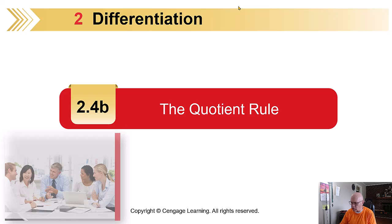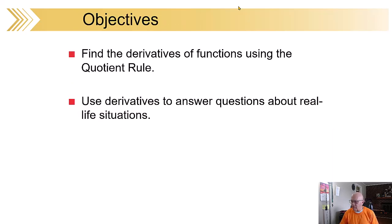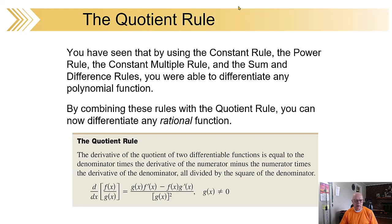We've got some practice on the product rule first — we don't want to confuse those two. Get the product rule done separately and then move on to the quotient rule. We'll find the derivatives of functions using the quotient rule. Remember, it's similar but different, so you have to be very careful. We'll also throw in a real-life situation or two. You've had the constant rule, the power rule, the constant multiple rule, the sum and difference rules — add in the quotient rule and you can differentiate any rational function, which basically means a fraction.